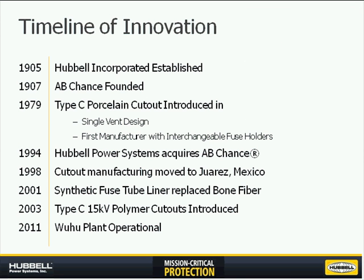As most of you already know, Hubble Incorporated was originally established back in the early 1900s, around the same time AB Chance was founded. In the late 70s, AB Chance released the Type C porcelain cutout, which is now also available in polymer. Those accommodate the S&C and the ABB style fuse holders as well, making interchangeability a pioneering design change in the early 80s. In the mid-90s, Hubble Power Systems acquired Chance, and shortly thereafter we started moving production into Mexico, and we also now have a plant in Wuhu, China.